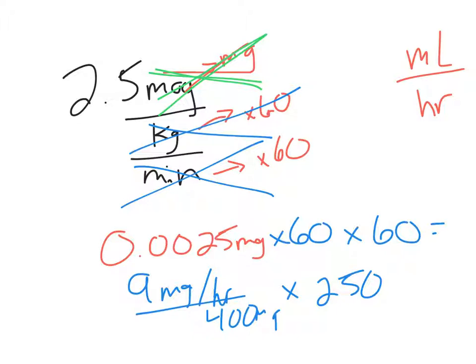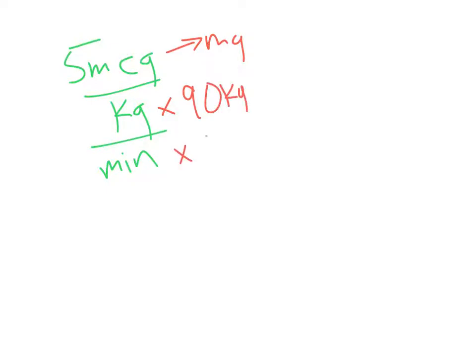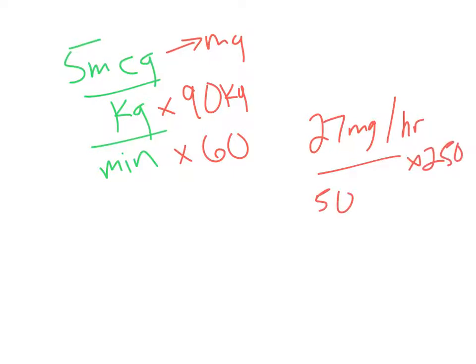The exact same thing happens on number 14. It starts off as 5 micrograms per kilogram per minute, so those three things have to happen: convert to milligrams, incorporate the patient's body weight of 90 kilograms, and multiply by 60 to get from minutes into hours. I took 5 times 90 times 60, which came out to 27 milligrams per hour, and that's what goes into the dosage calculation. I then divided by 50 and multiplied by 250.